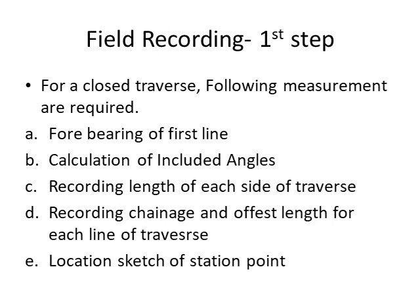After recording the angle at A, shift the instrument to station B. Carry out the temporary adjustment — do the centering properly, bringing the vertical axis of the instrument over the peg marked at B. Set vernier A to 0° and B to 180°, establish a line of sight with the next station C. After establishing the line of sight with C, tighten the lower plate clamp screw, loosen the upper plate clamp screw, and bisect station A to get angle CBA.